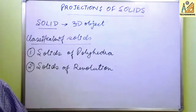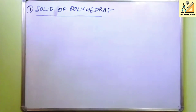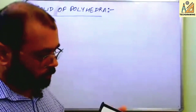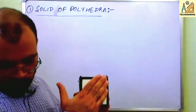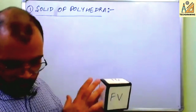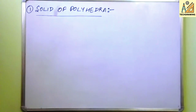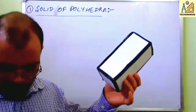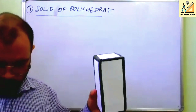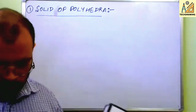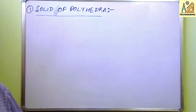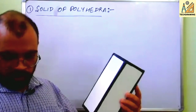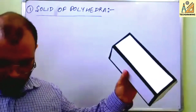So what is a polyhedron? Consider this cube — it is a solid with different faces and edges. Similarly, what may be called a cuboid in everyday language, we call a square prism in engineering drawing. We also have a pentagonal prism, which is also a type of prism.